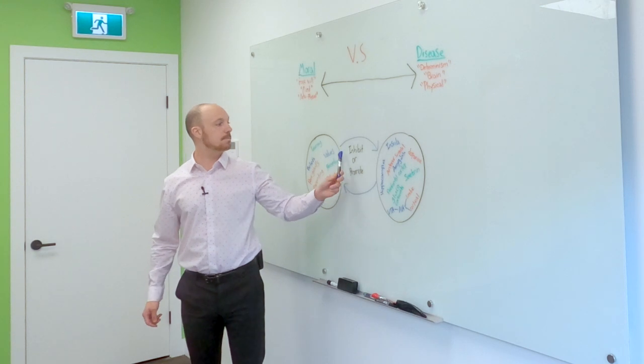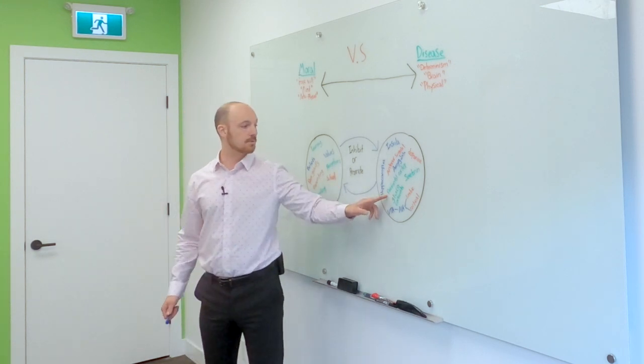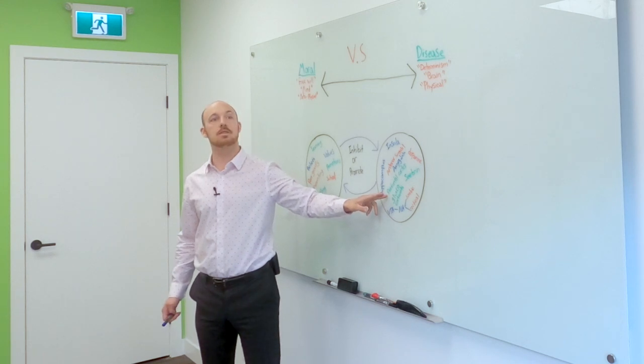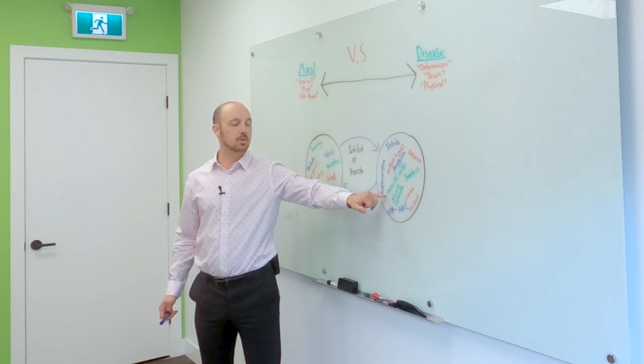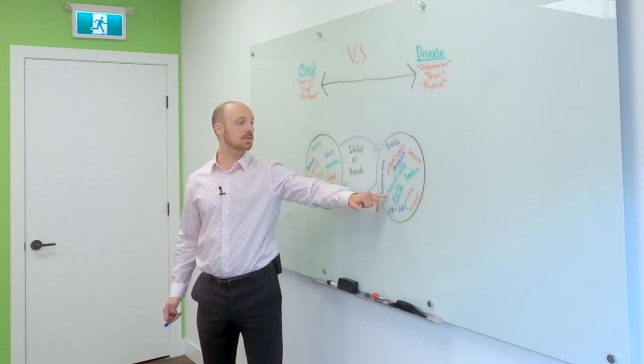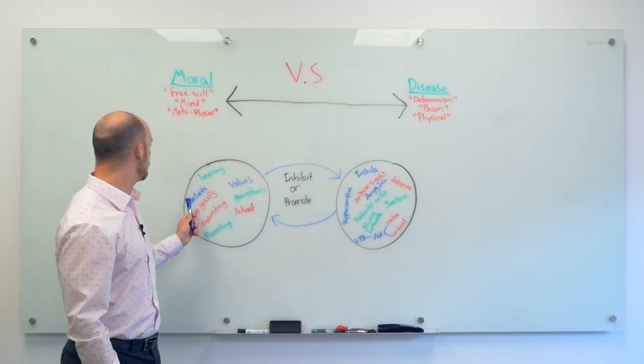These can inhibit or promote each other. So here's the thing: prefrontal cortex will cause me to do the right thing even when it's the harder thing to do. So using drugs is easier than not using drugs. My prefrontal cortex should stop me from doing that.